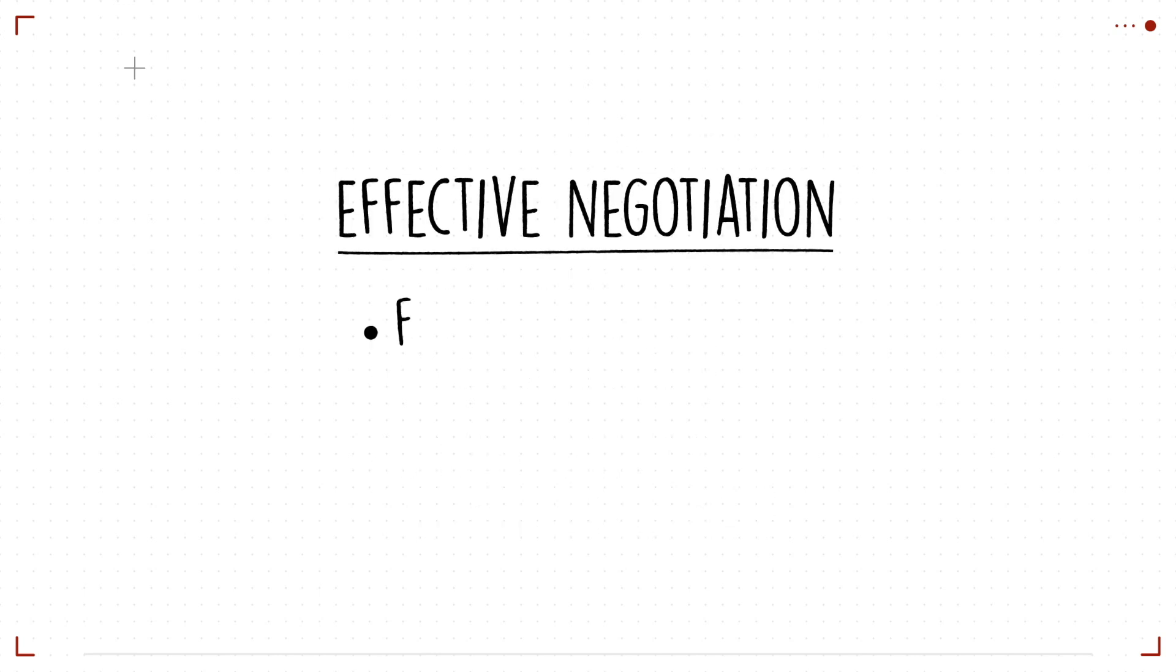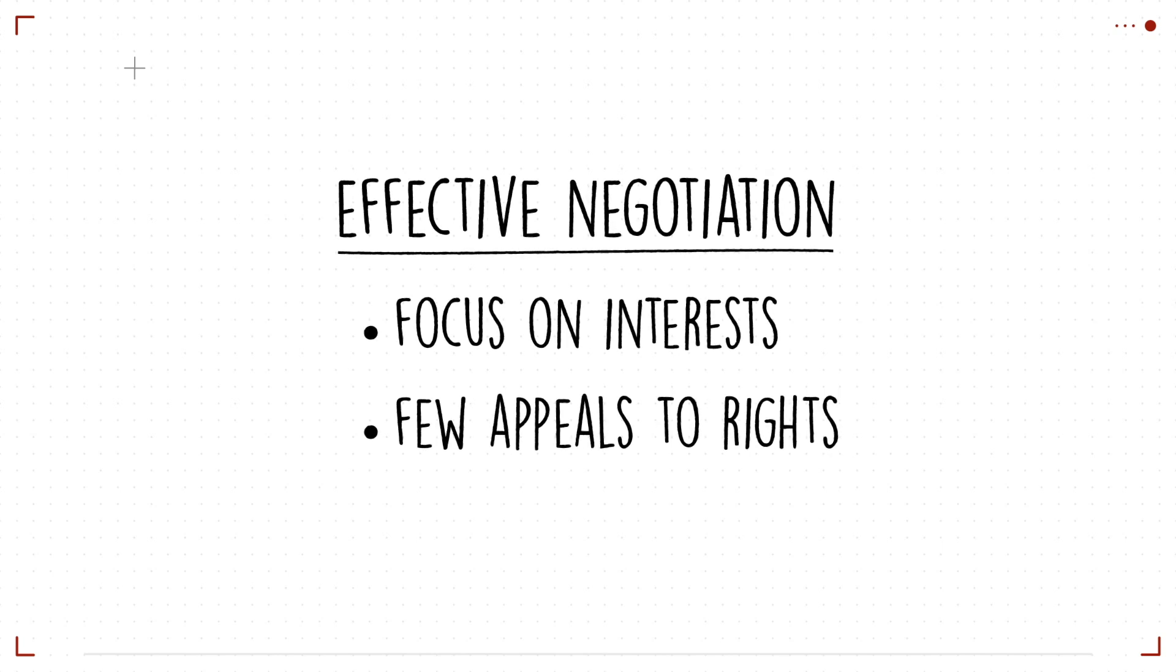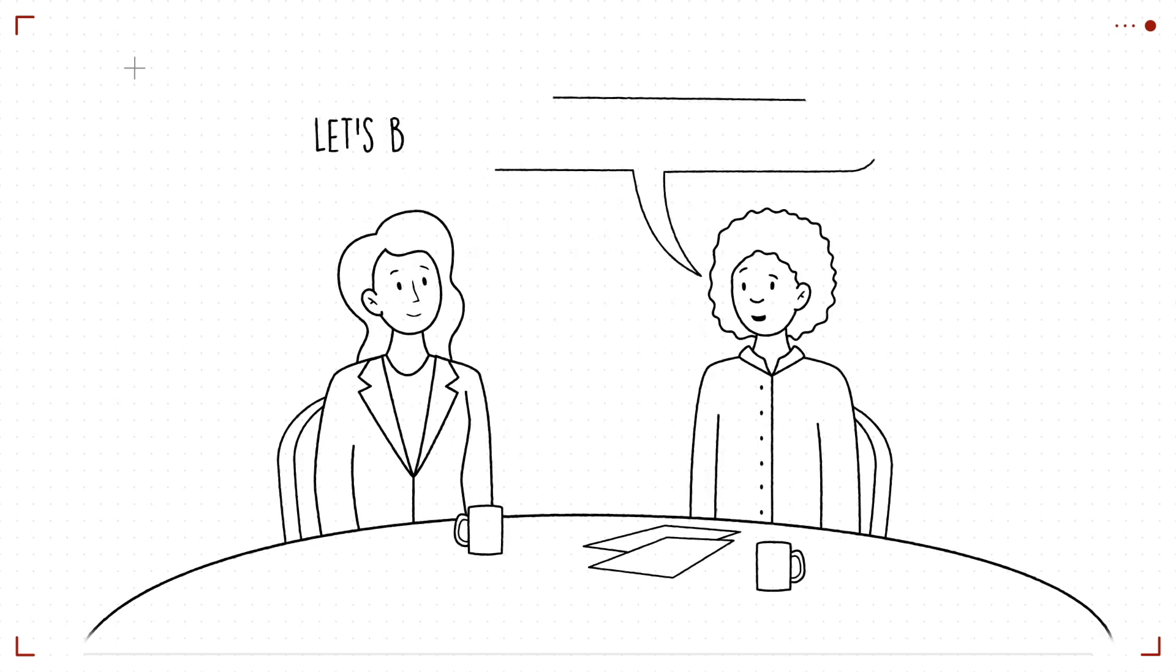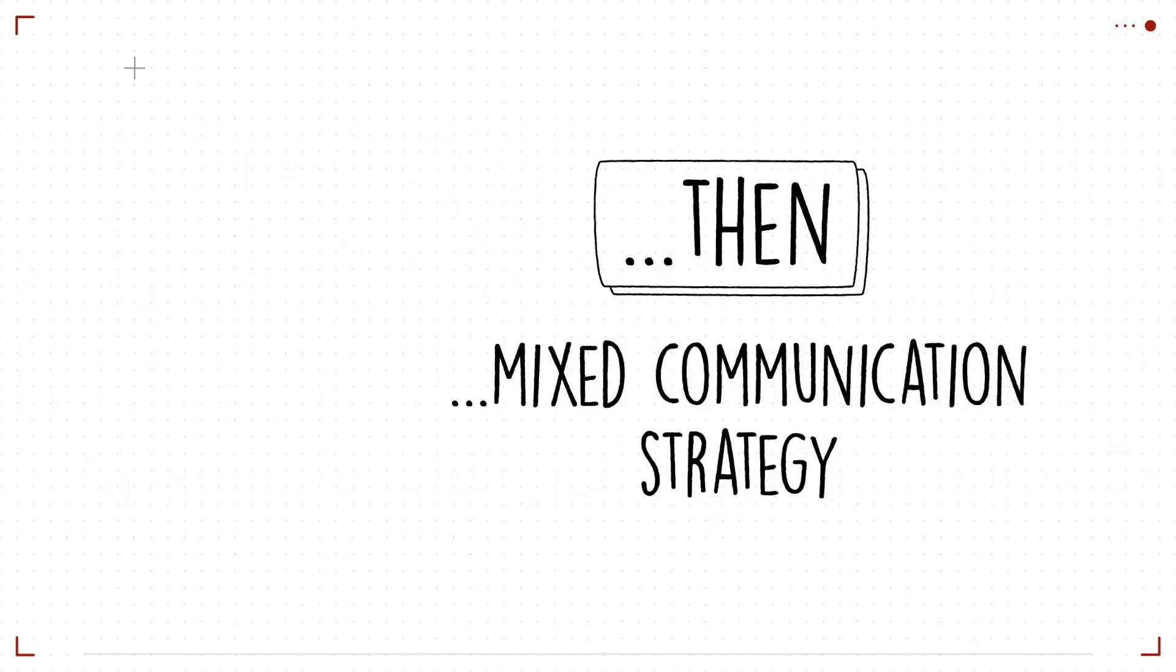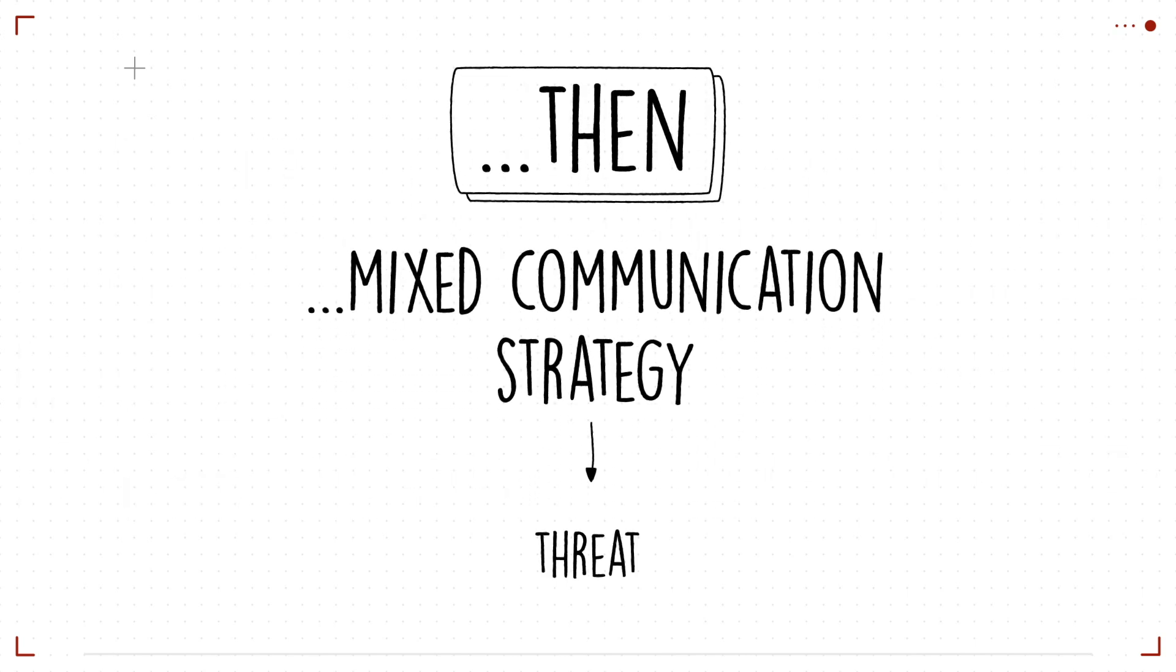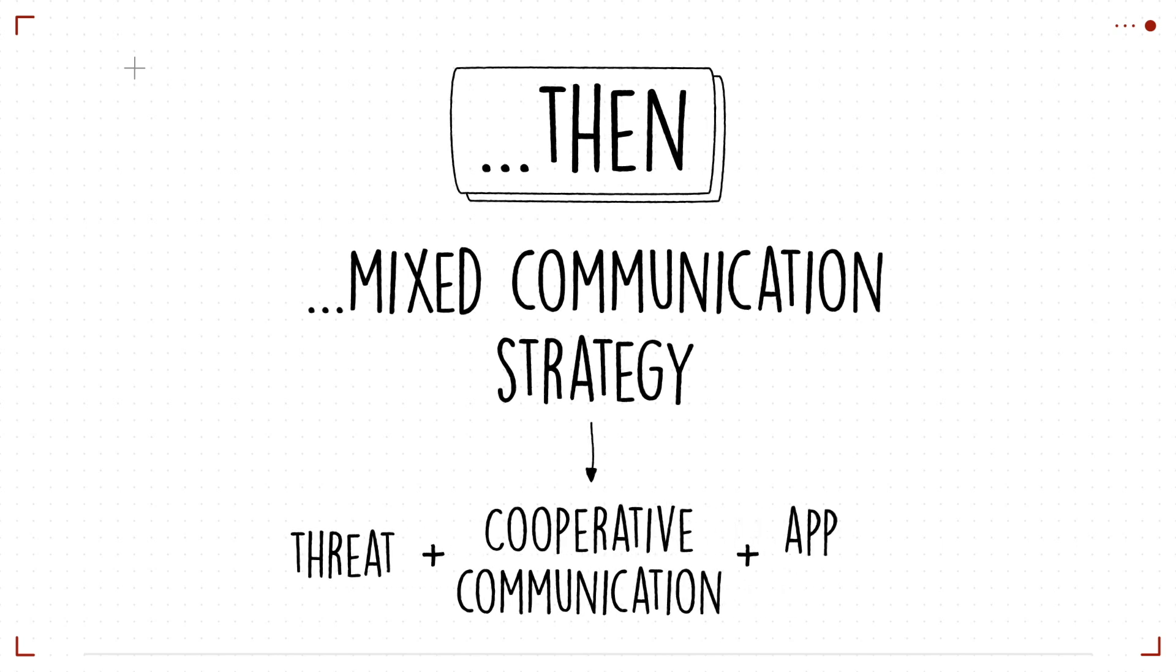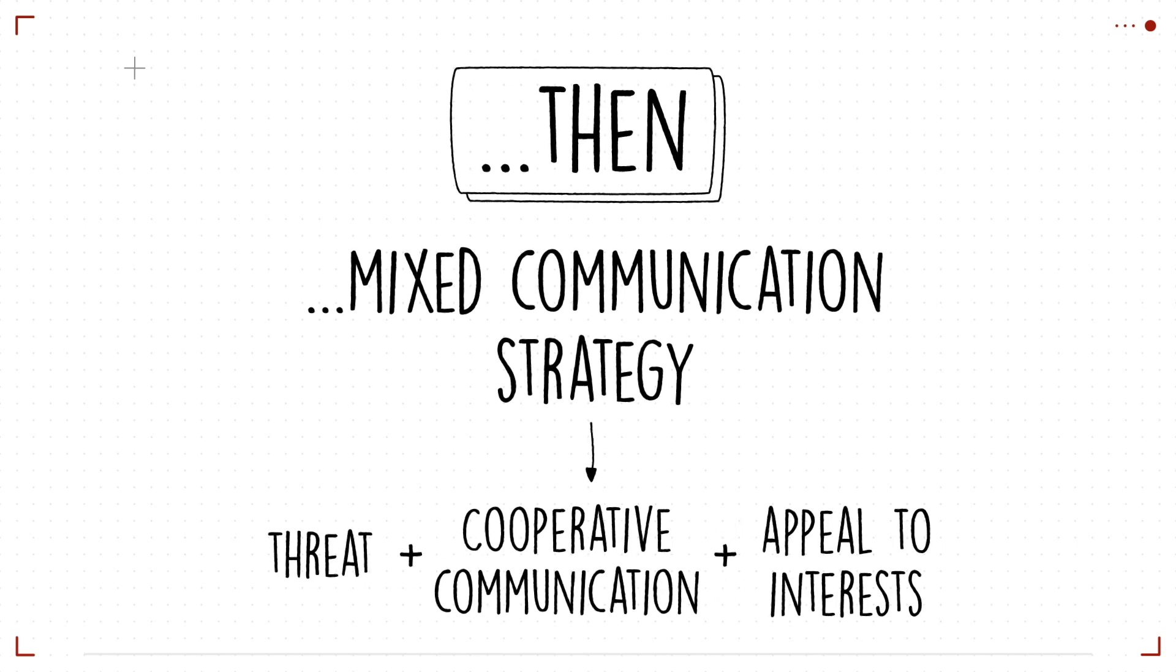In an effective system, people focus a lot on interest and use very few appeals to power and rights. Always aim at getting back to your interests even in the face of threats and power strategies from others. If others are using rights and power strategies, a mixed communication strategy that combines a threat with a cooperative communication and appeal to interests will help you better manage disputes.